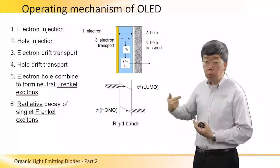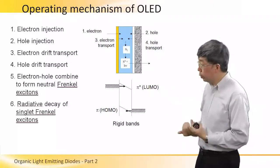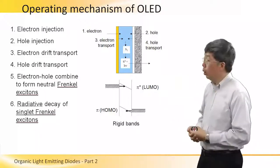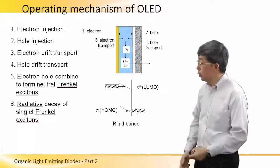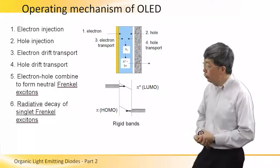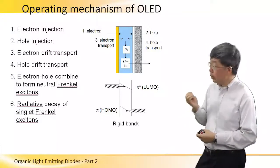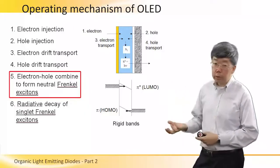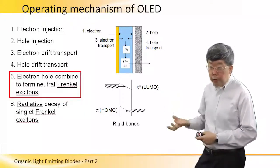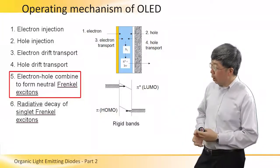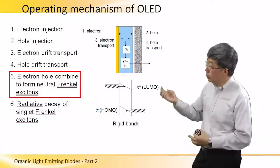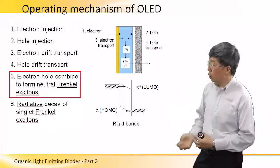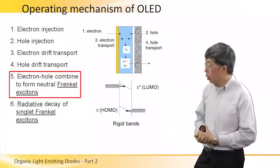Because they have opposite signs of charge, the electron and the hole will move in opposite directions. Eventually, the electron and the hole will encounter one another, and they will form a neutral excited state called the Frenkel exciton. The Frenkel exciton is one of three types of excitons, and for organic materials, we normally only encounter the Frenkel type. These are very small sized excitons.